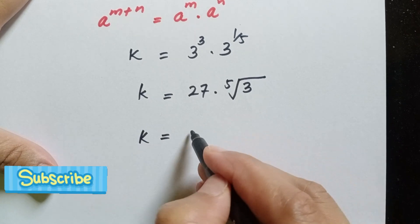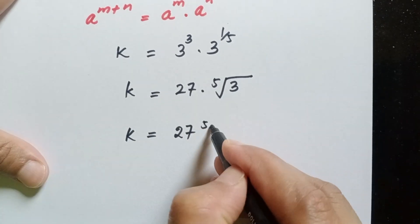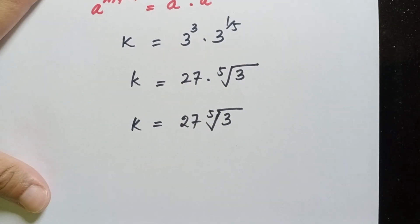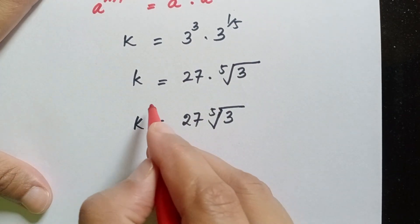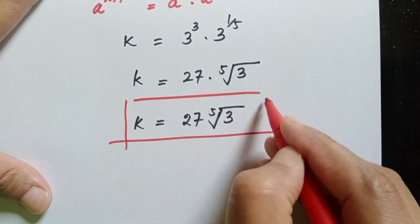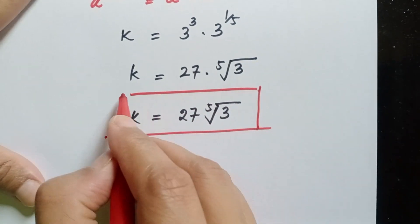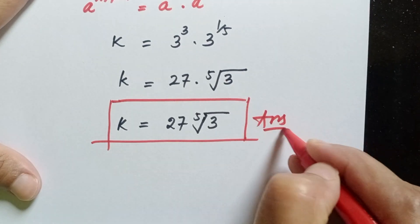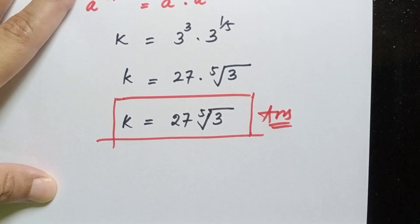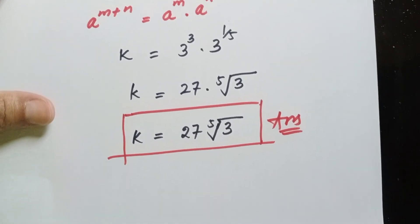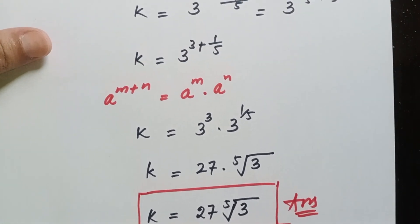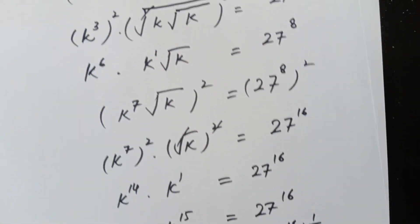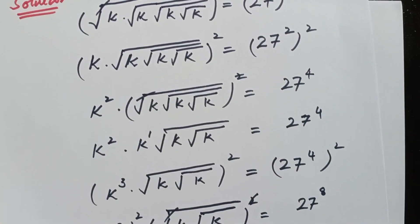So k is equal to 27 times the fifth root of 3 — that is the final answer, the required value of k for our question. Thanks for watching. Don't forget these steps to solve this question; all steps are very important. Don't forget to subscribe to my channel for more solutions and videos like this. Till the next video, bye!